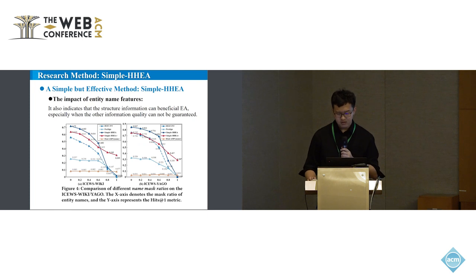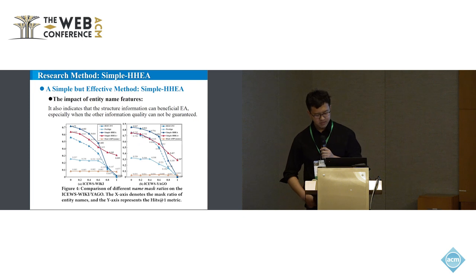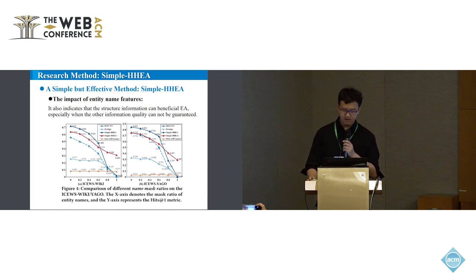For name features, as shown while the mask ratio of entity names gradually increases, the performance of EA methods which highly rely on entity name information drops sharply. As the mask ratio of entity names gradually increases, the basic Simple HHEA also drops sharply like other baselines. However, the role of entity structure encoder in Simple HHEA+ becomes prominent, even surpassing the basic version when the mask ratio is 18%.